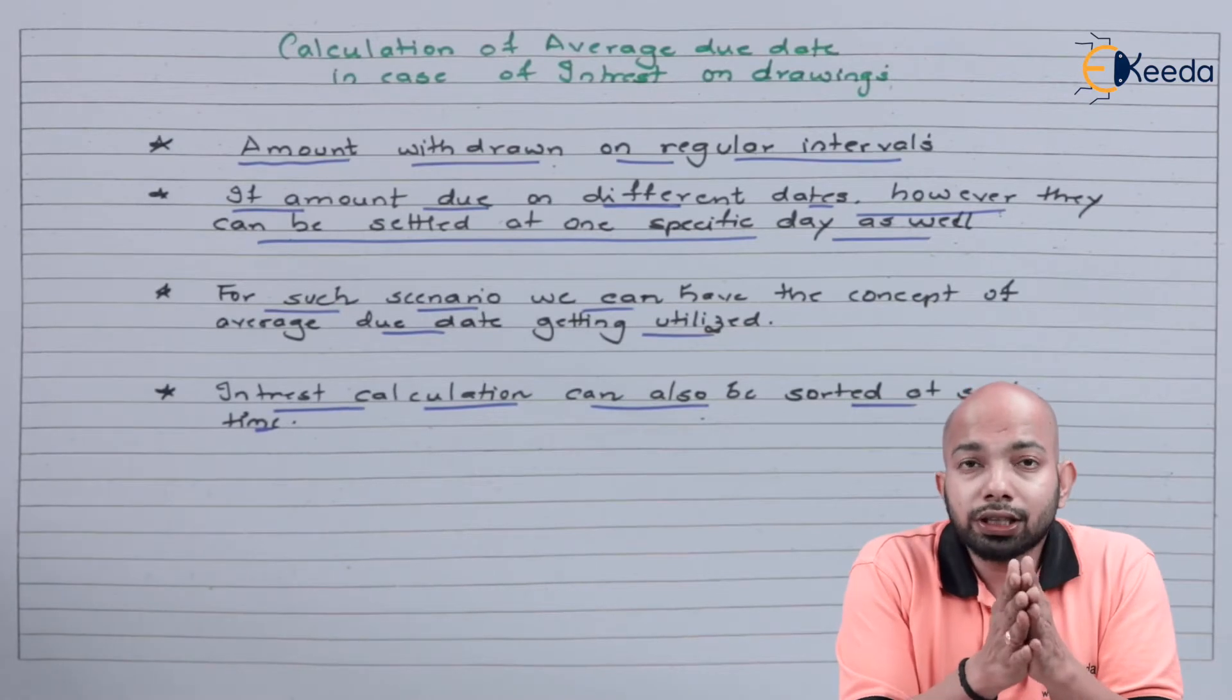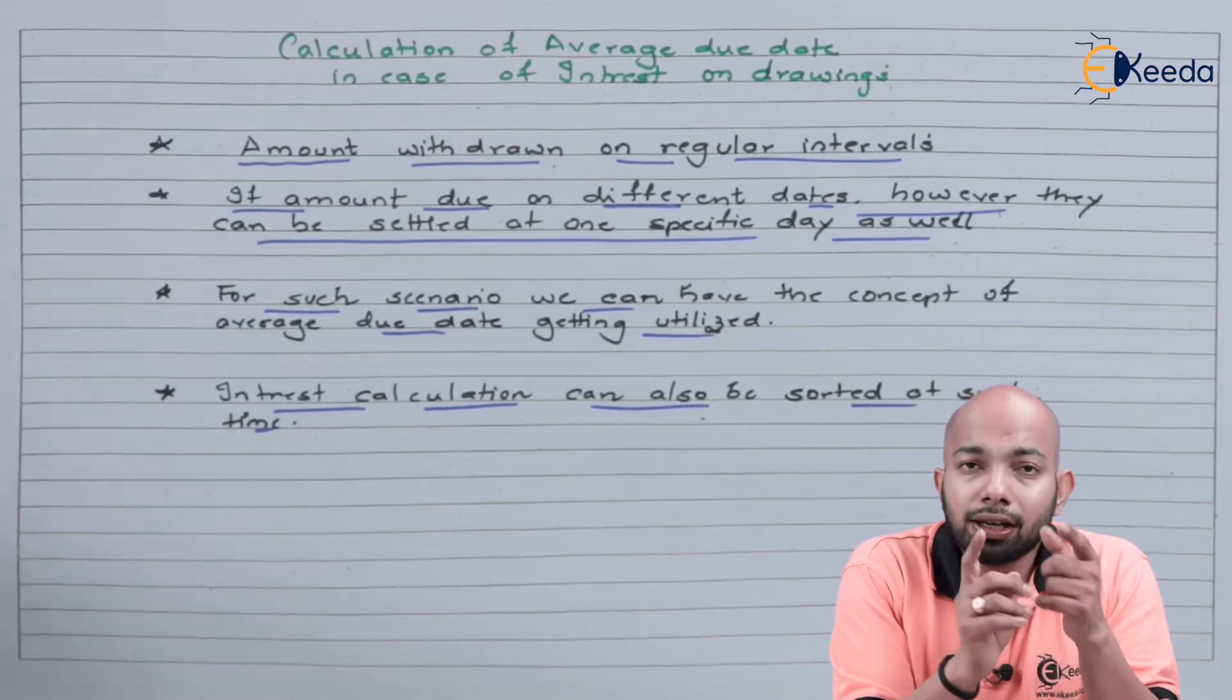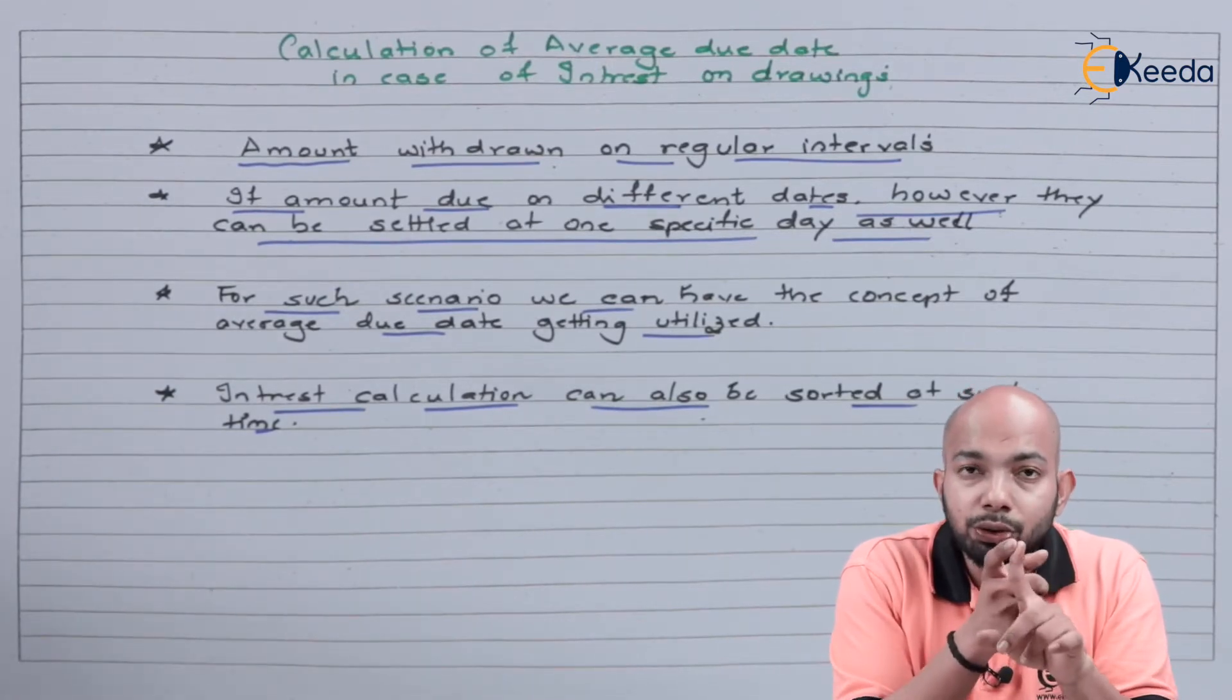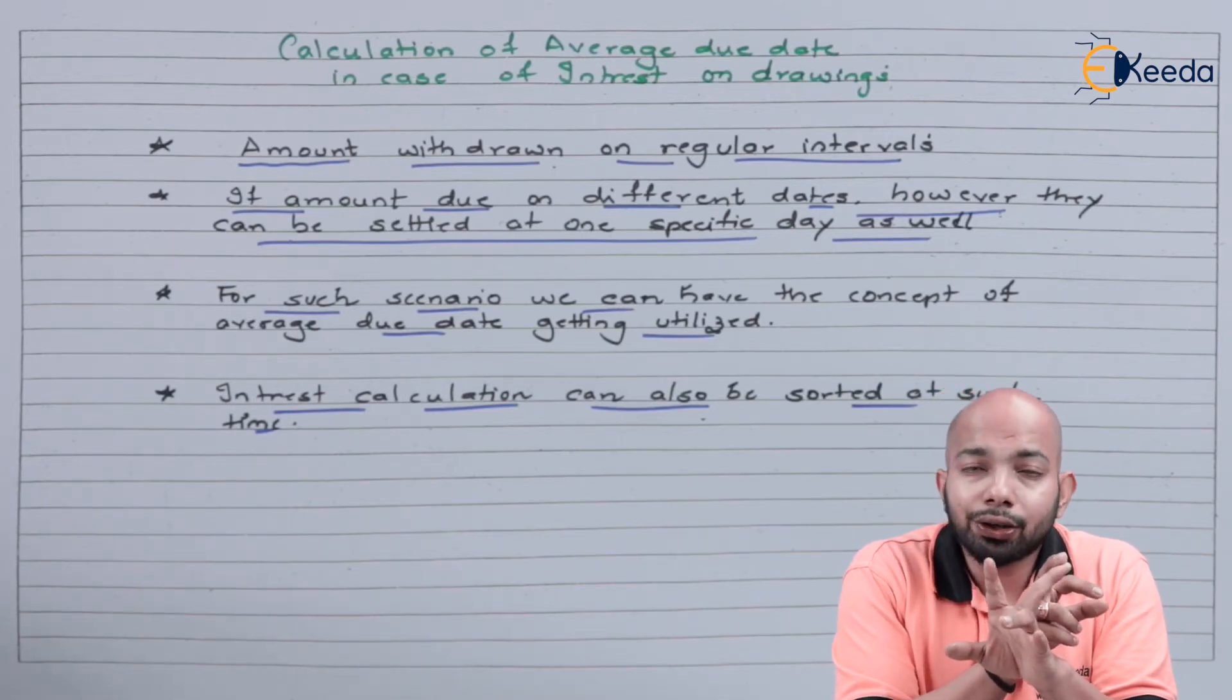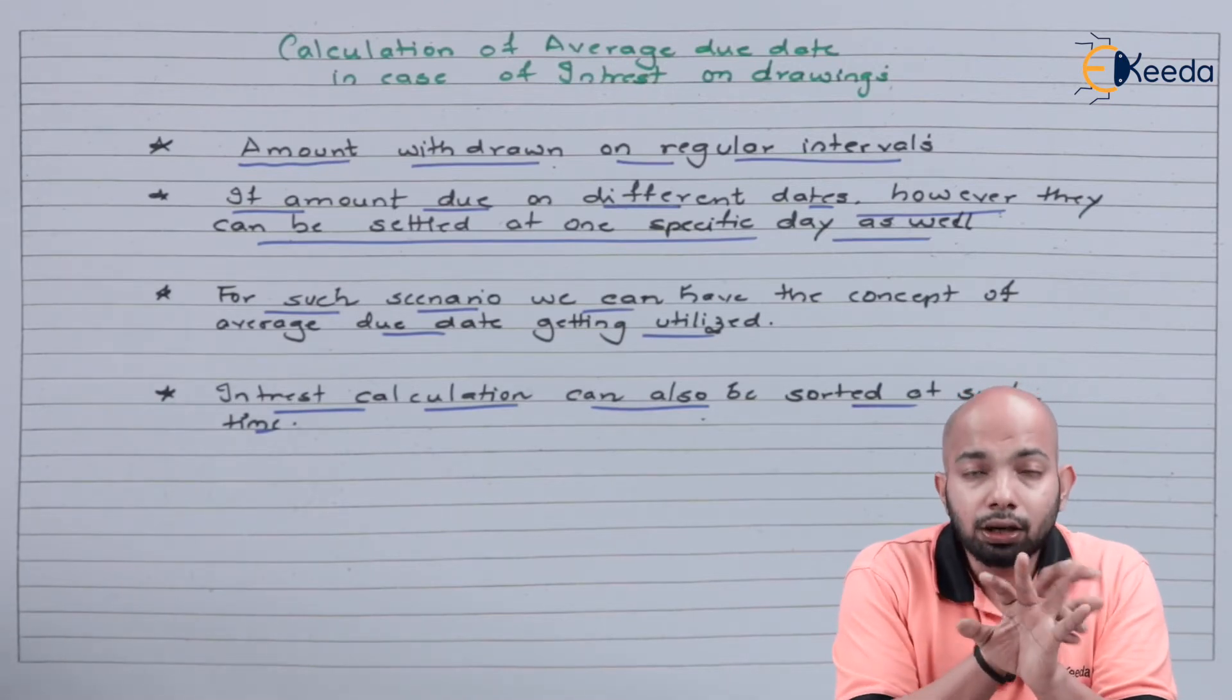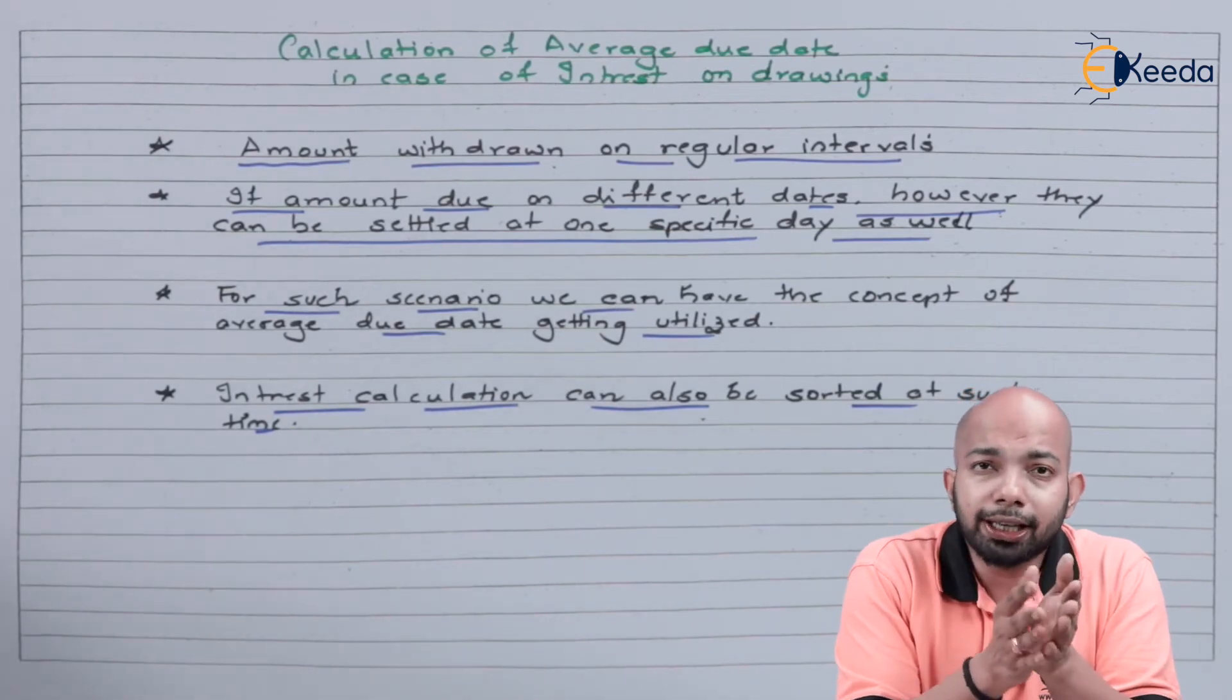Now to give you a rough example, we will be doing an illustration in the next video which will help you understand how the interest is supposed to be calculated both in the ordinary system that we do and in the average due date system. Average due date system will also have certain scenarios whereby if we take the average due date or the base date as the start date of some other thing, something like this will be mentioned there.